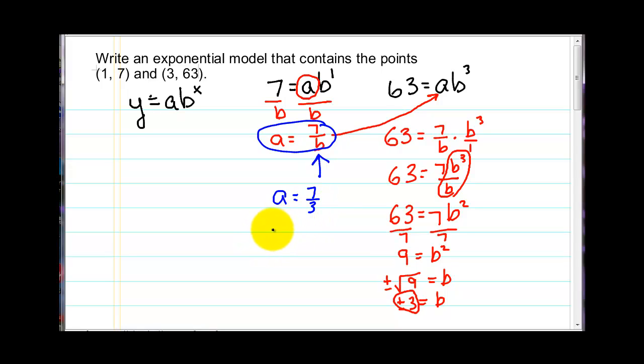We can't really simplify that, so we'll leave that as a fraction. So to finish the problem, we just have to write the model. So we now have y equals, and we're going to put in our a, 7 thirds, times our b was 3 to the x power. Again, since our b is bigger than 1, this would be an exponential growth model. And again, if we plotted that exponential growth, it would go through our two points. So this was our final answer.